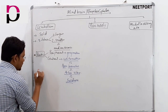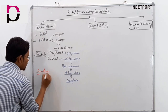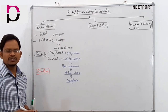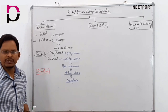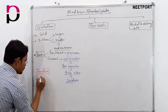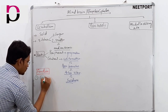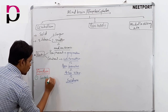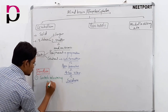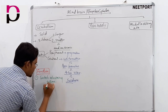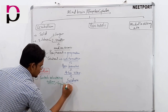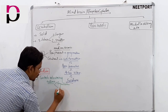Now let's talk about the functions of the cerebellum. The cerebellum always controls voluntary movements. The first function is it controls voluntary actions, which include equilibrium and posture.